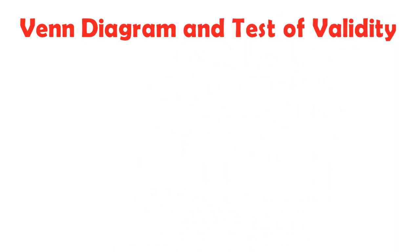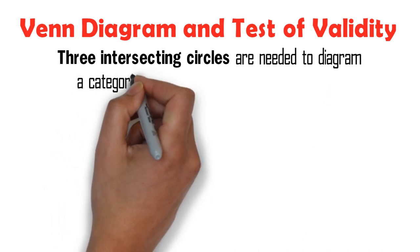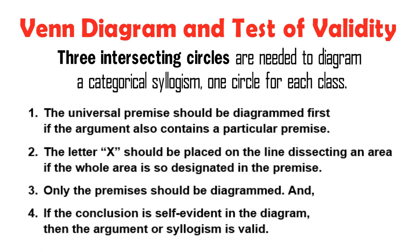A Venn Diagram can be used to show the validity of categorical syllogisms. Three intersecting circles are needed to diagram a categorical syllogism — one circle for each class. The following rules will be observed: Rule 1: The universal premise should be diagrammed first if the argument also contains a particular premise. Rule 2: The letter X should be placed on the line dissecting an area if the whole area is so designated in the premise. Rule 3: Only the premises should be diagrammed. Rule 4: If the conclusion is self-evident in the diagram, then the syllogism is valid.